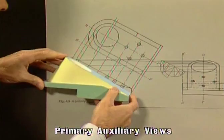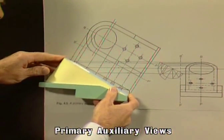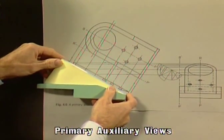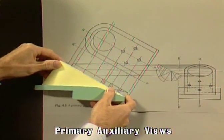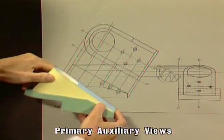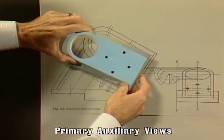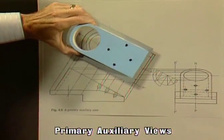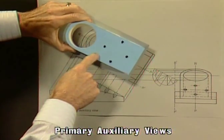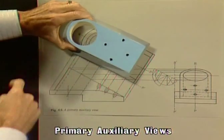Using the revolving technique, if we project off from that face and twist it around on that face here, we've got the true surface of that object.